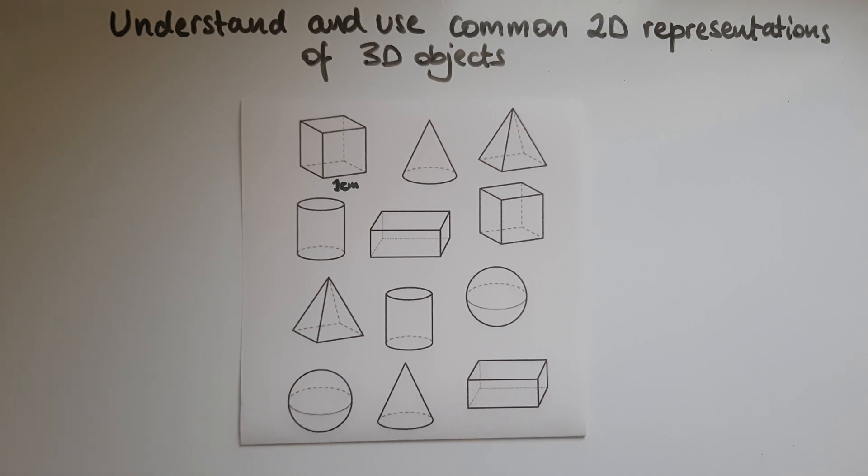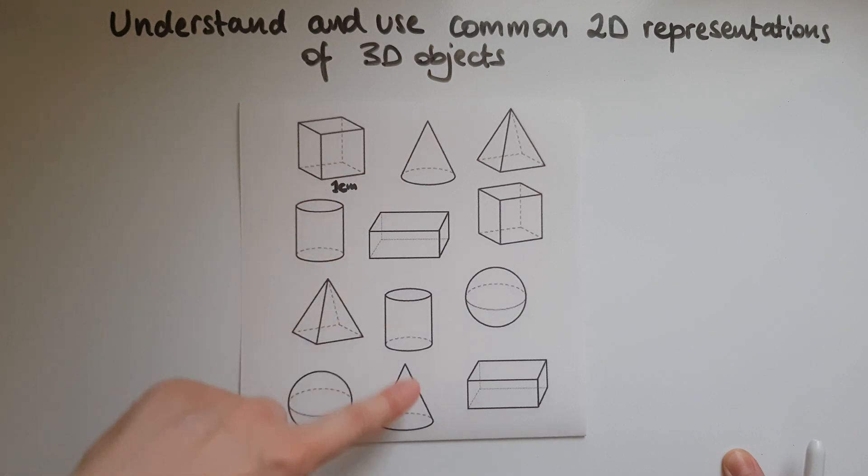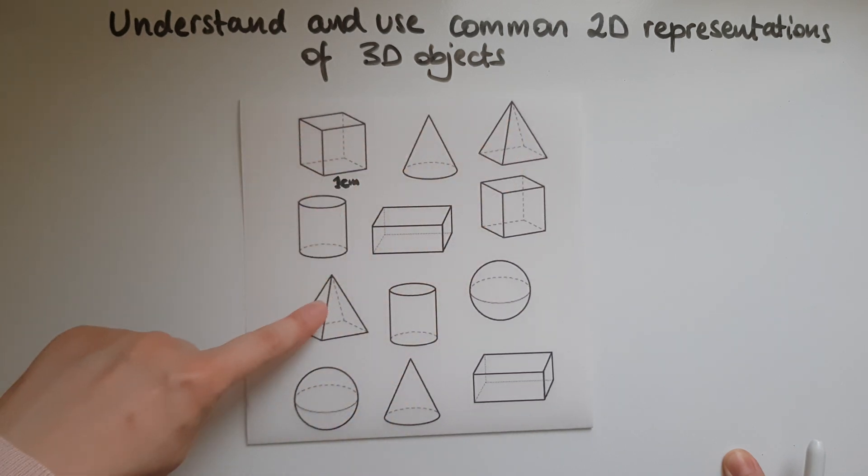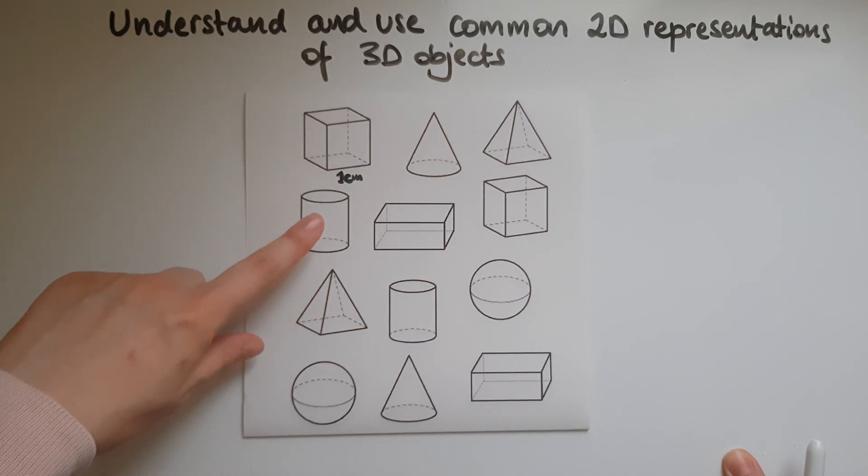Maybe ice cream cones, maybe balls. So this here is a cube and so is this one, and we have cuboids over here, cones, pyramids, cylinders, and spheres.